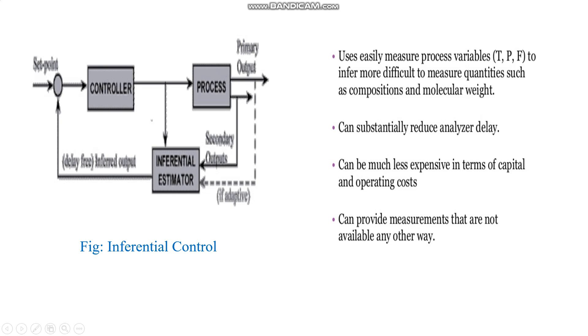In this diagram, there is a set point, controller, process, and primary output. Another secondary output from the process is given to the inferential estimator. If adaptive, then this output is taken. The inferential estimator output gives feedback.